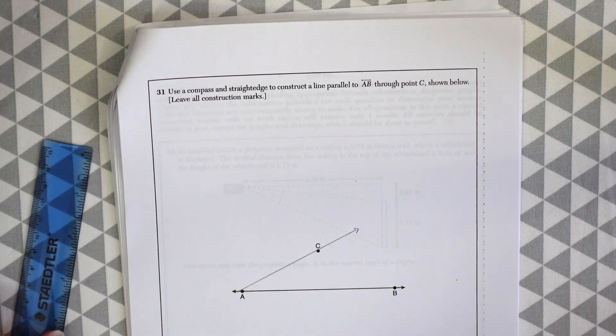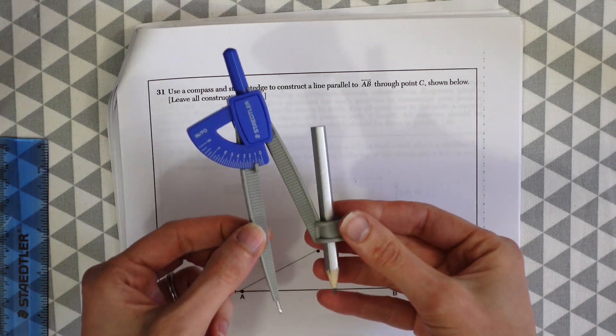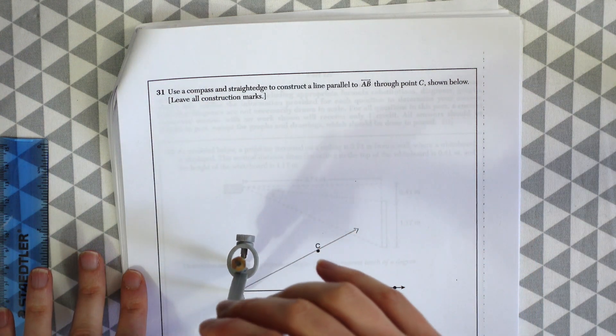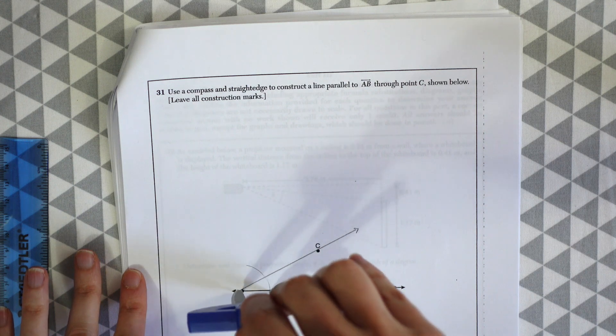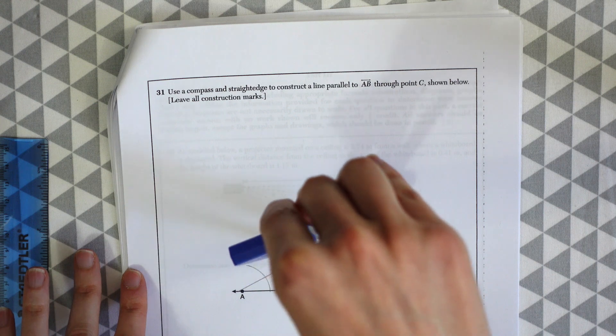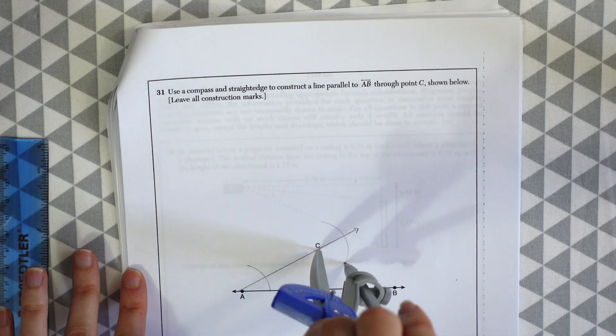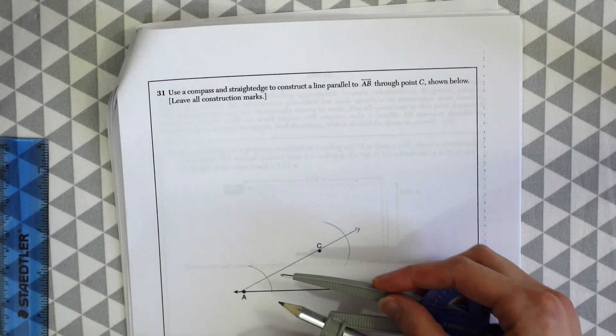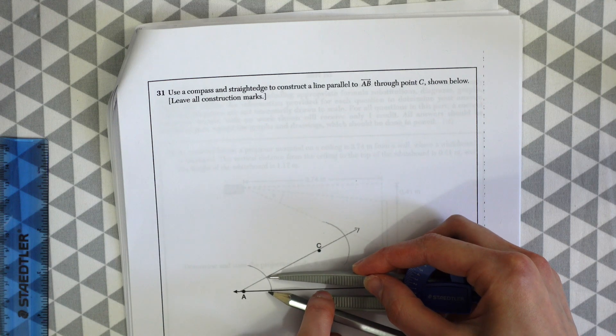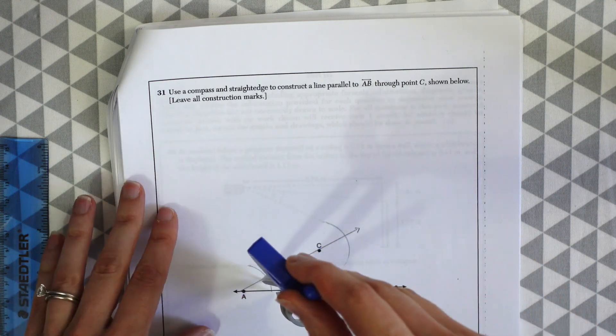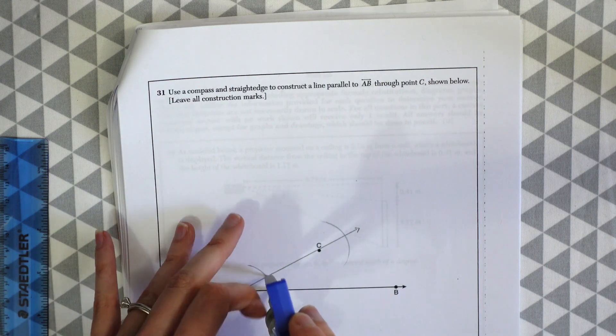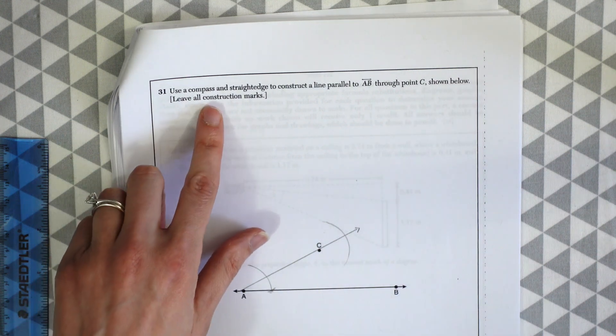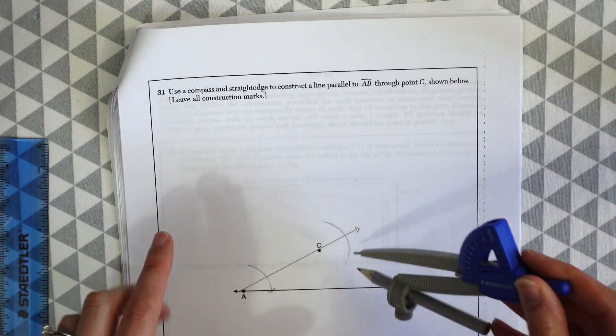So the first thing we're going to want to do is connect points A and C. So we get this line here. And now we're gonna take our compass and just open it a little bit for a small angle. Take it to point A and just make our little mark. And then we're gonna go to point C leaving the same distance on the compass and do the same thing. So now we're going to get corresponding angles going by measuring the distance with our compass from this line to this line and make a little mark. Since we have to make every construction mark want to make sure that we make that mark. All right they want to see all the construction marks.